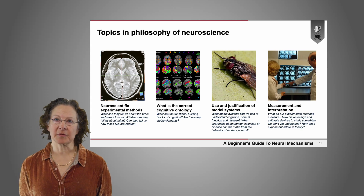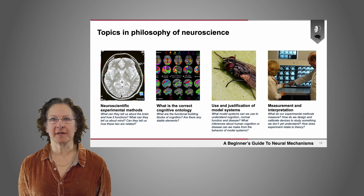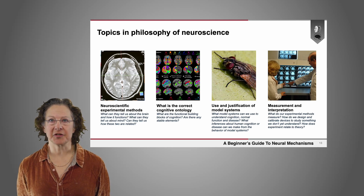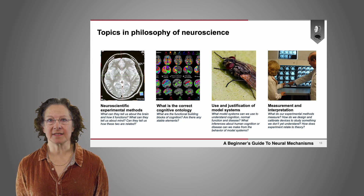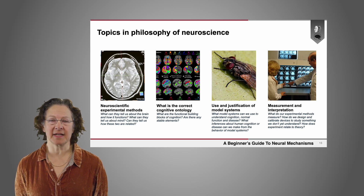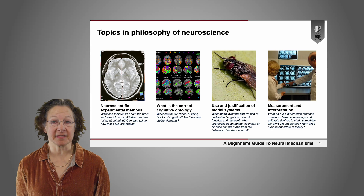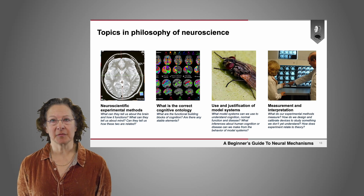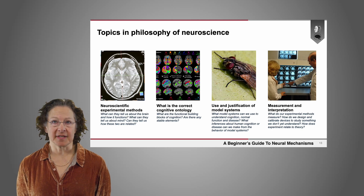We might ask questions about measurement and interpretation. What do our experimental methods measure? How do we design and calibrate devices to study something — that is, the brain — that we don't yet understand? We don't even know what the most important basic coding mechanisms of the brain are. So how do we build systems and devices to measure brain function and understand it properly?